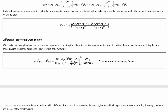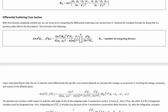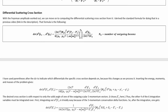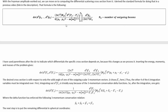With the Feynman amplitude worked out, we can move on to computing the differential scattering cross-section from it. I derived the standard formula for doing that in a previous video — there's a link in the description. The relevant formula is this one. I have used parentheses after the dσ to indicate which differentials the specific cross-section depends on, because as we integrate over some differentials, the remaining ones change, and calling all of them dσ would look like we're setting unequal quantities equal.